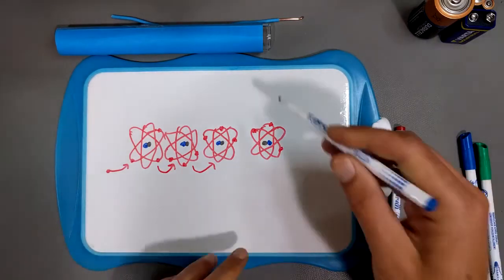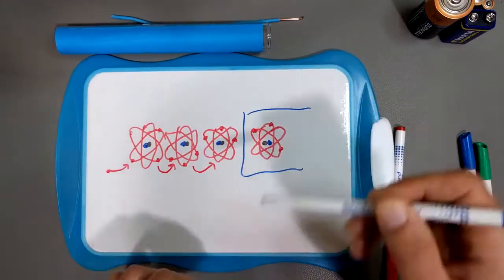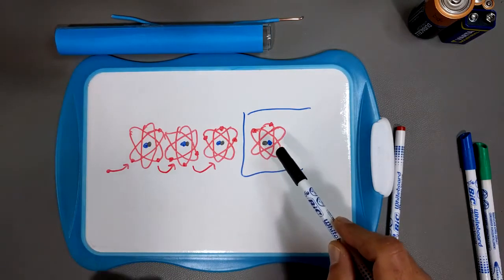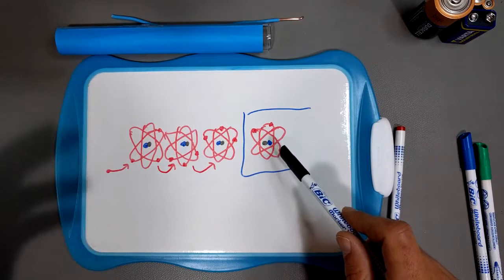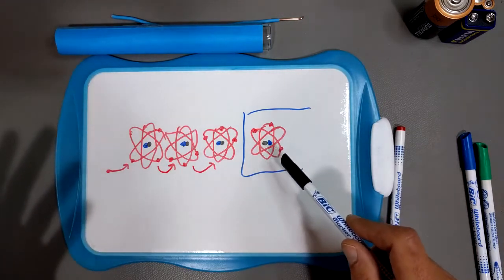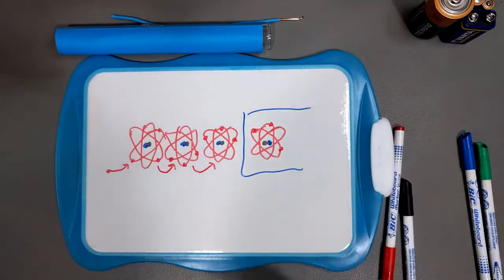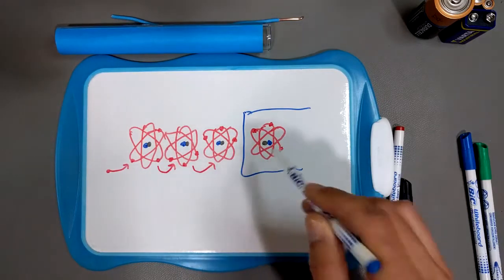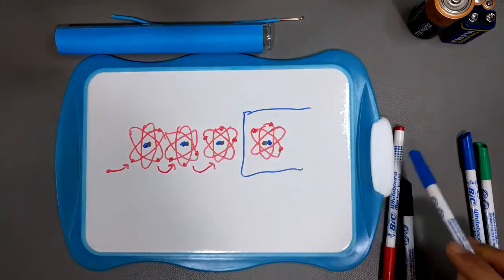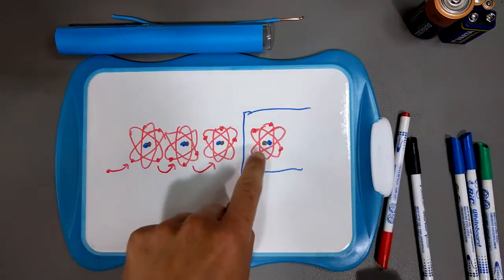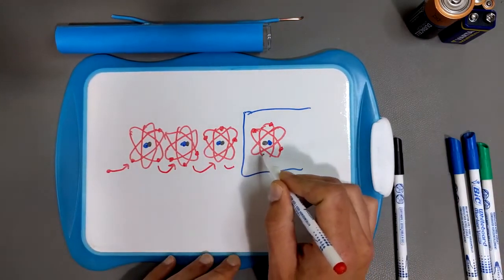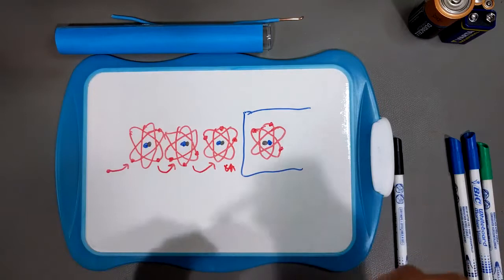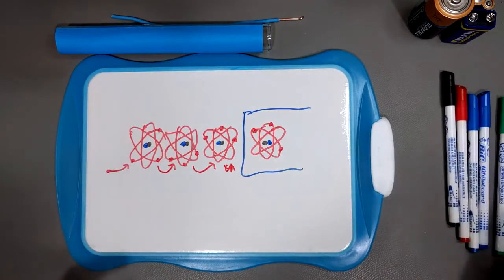An insulator is different. Think of it like the crabby neighbor Mr. Stinkmore who's always yelling at kids to get off his lawn. An insulator doesn't like to share electrons. All the conductor atoms like to pass electrons along, but Mr. Stinkmore says 'no way, get off my lawn.' When a neighboring atom tries to pass him an electron, he refuses — and hence current doesn't flow. So that's a conductor and that's an insulator.